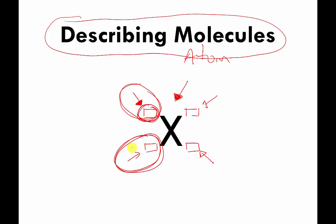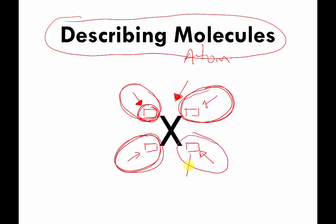Atoms can have electrical charges, which we'll talk about later this week. If you want to tell people the electrical charge of your atom, you write a number in the upper right. The one I'm most concerned about now is the lower right — if you put a number there, it tells you how many of the X atom are attached to each other. I'll go into more detail on the next page.